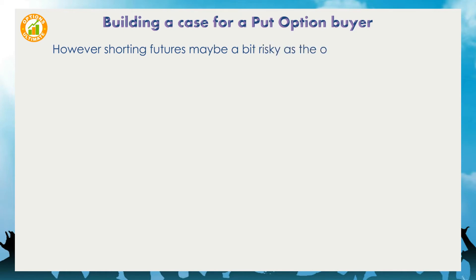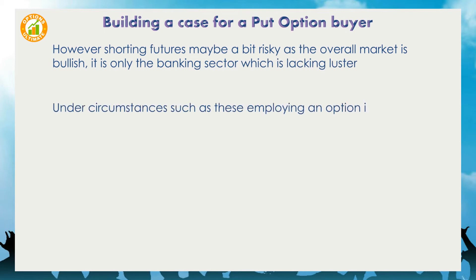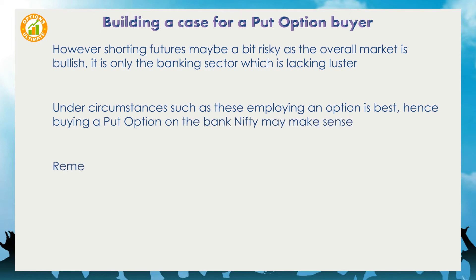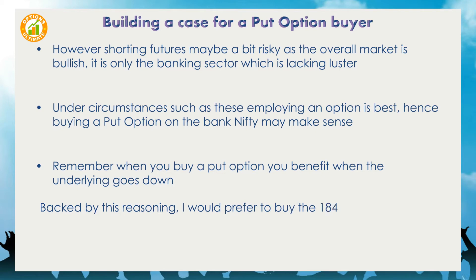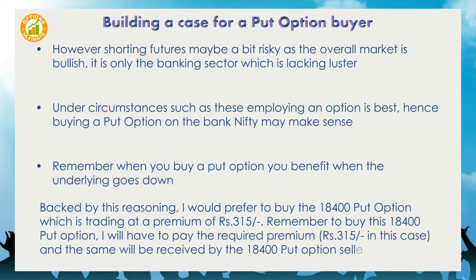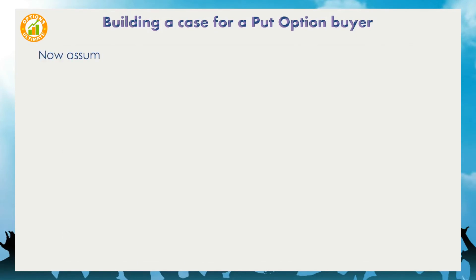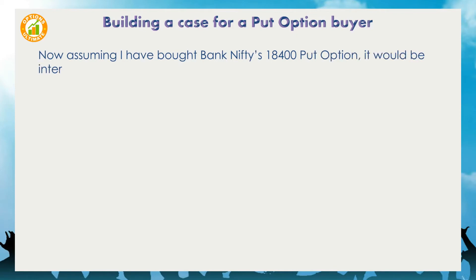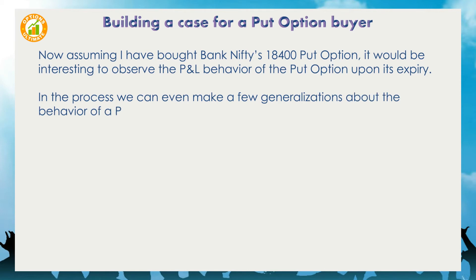However, shorting futures may be a bit risky as the overall market is bullish — it is only the banking sector which is lacking luster. Under circumstances such as these, employing an option is best, hence buying a put option on Bank Nifty may make sense. Remember, when you buy a put option you benefit when the underlying goes down. Backed by this reasoning, I would prefer to buy the 18,400 put option which is trading at a premium of ₹315. To buy this 18,400 put option, I will have to pay ₹315, and the same will be received by the 18,400 put option seller. It would be interesting to observe the P&L behavior of the put option upon expiry, and we can make a few generalizations about the behavior of a put option's P&L.